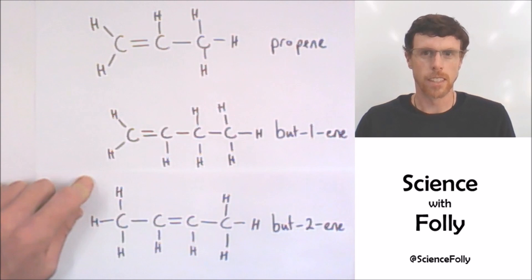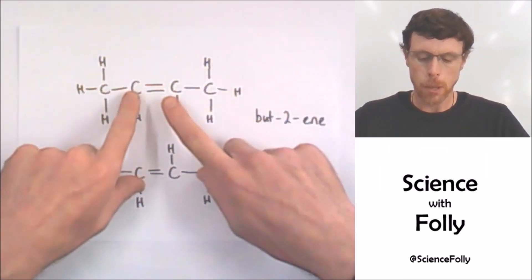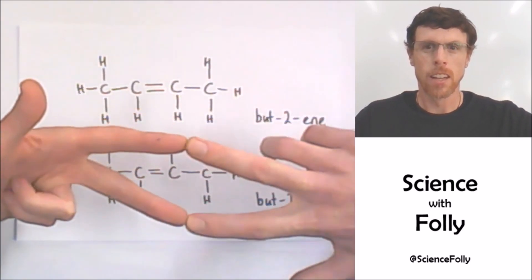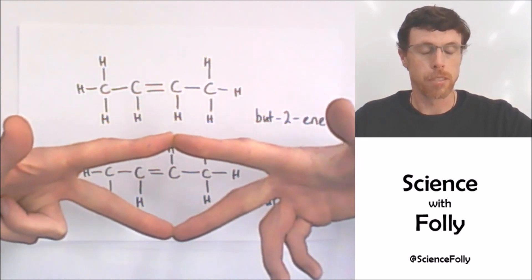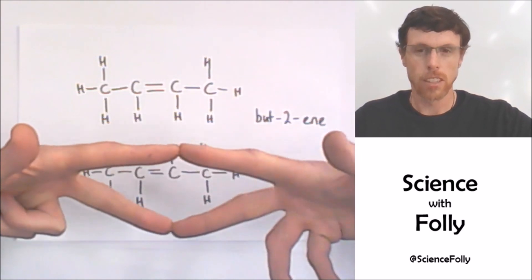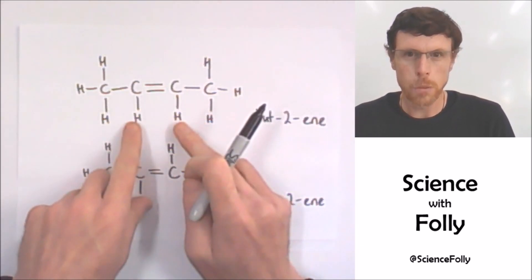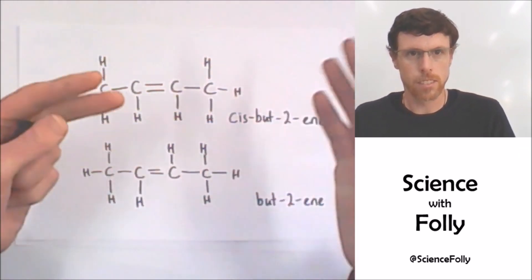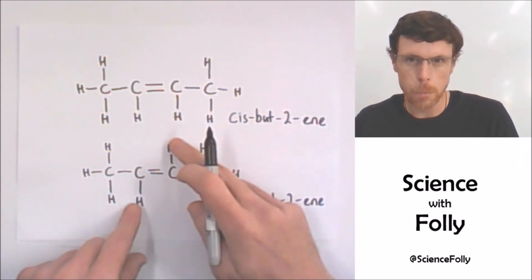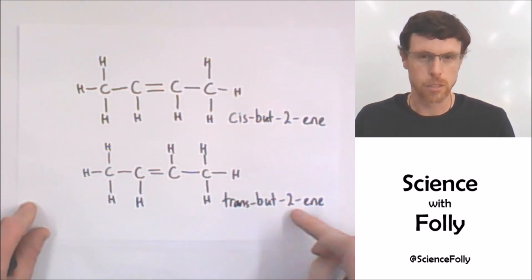Because of the double bond, the hydrogens can be locked onto the same side, since the double bond prevents the molecule from rotating. So the hydrogens can be both on the same side or on opposite sides. When both hydrogens are on the same side we call it cis-butene — cis meaning 'same side' — and when they are on opposite sides we call it trans-butene.